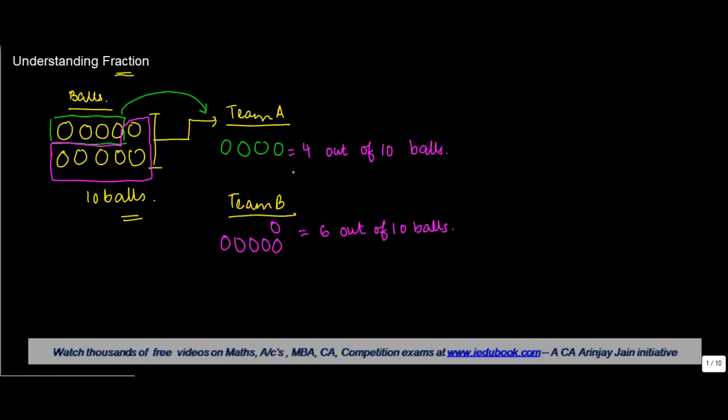So the part of balls which team A got can also be said to be 4 tenths. And this is written as 4 upon 10 which is read as 4 out of 10. So team A basically got 4 balls out of 10 balls.